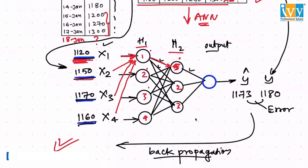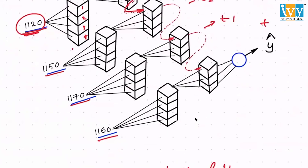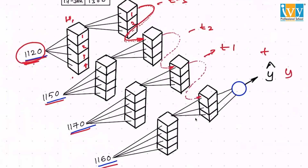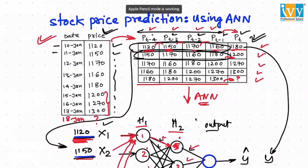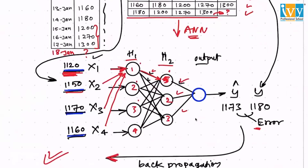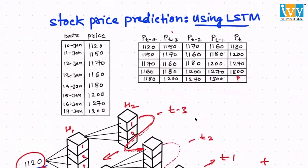In backpropagation for normal ANNs, you produce an error and back-propagate, changing the weights for all layers once. But in RNNs or LSTMs, you calculate the error and then back-propagate at time t-1, then at time t-2, then t-3, t-4 — you back-propagate multiple times. This is the concept that helps us understand the relationship of every input with the other time steps compared to the target time stamp.